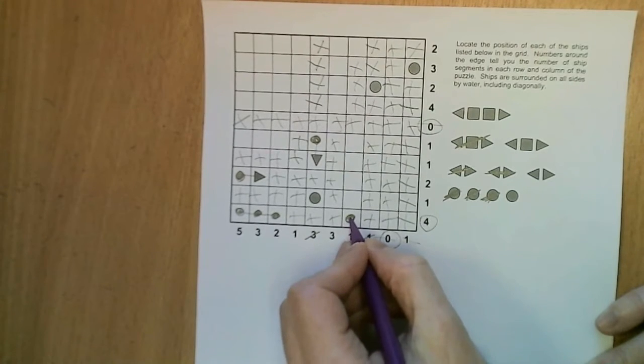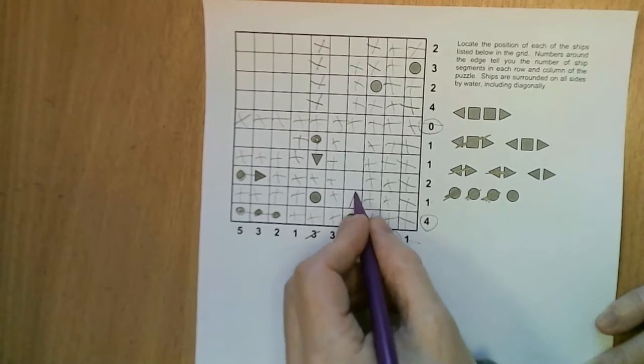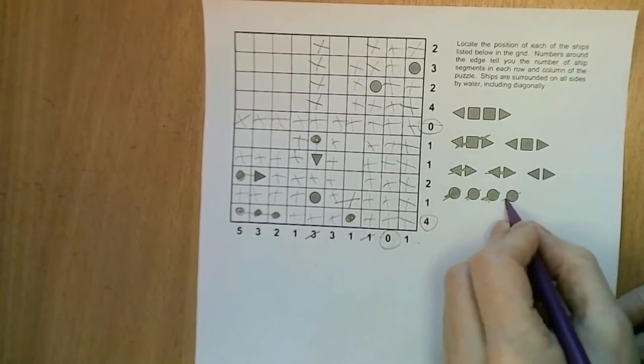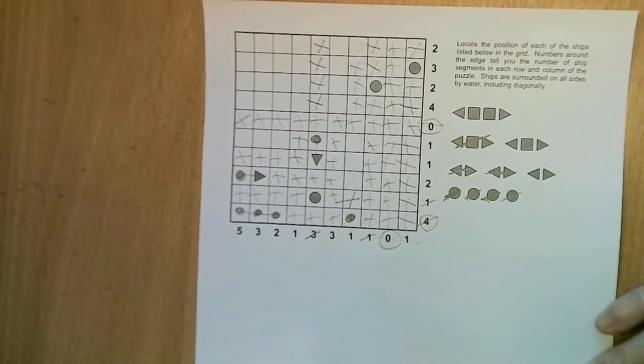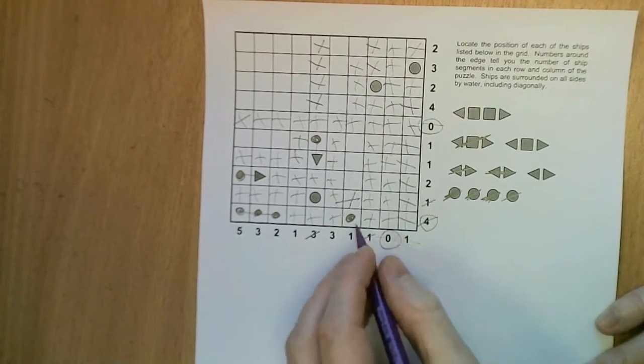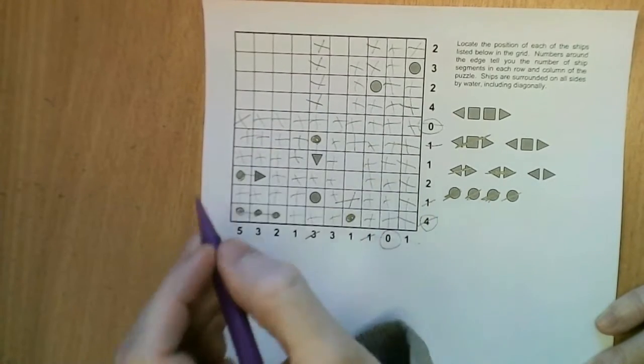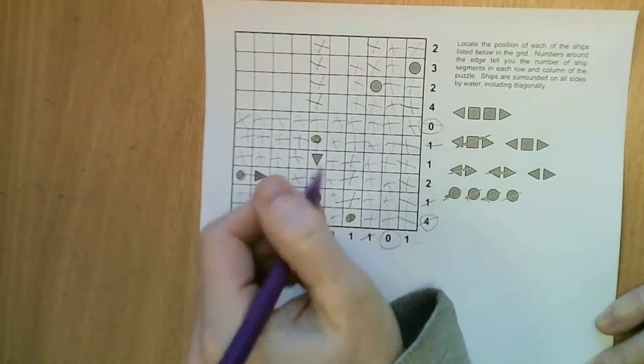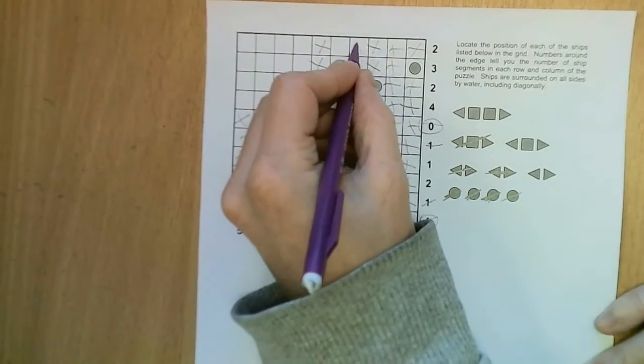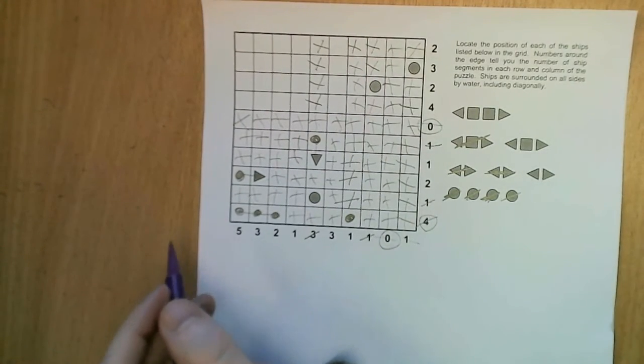And in fact we can see that we had a one here and we've placed the sub, so it must be a single square ship and we placed all our submarines in the grid. Now let's look at what we placed, so this is a one so we can cross off that as we have the ship segment there. This is a one so we can cross off there, and okay so we know that there is one ship placed composed of four segments.